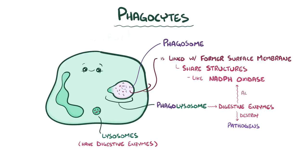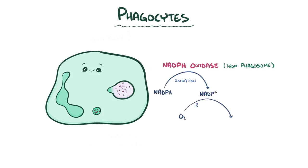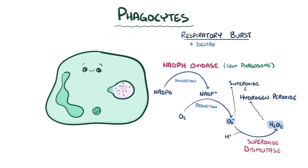The lysosomal enzymes also activate NADPH oxidase, which came from the phagosome, causing NADPH to undergo oxidation and lose two of its electrons, which reduces them to superoxide ions, or O2⁻. Another enzyme, superoxide dismutase, can take these ions and combine them with hydrogen ions to form hydrogen peroxide, or H₂O₂. This process of producing superoxide ions and hydrogen peroxide is called the respiratory burst. These ions and molecules destroy pathogens by damaging their cell membranes and proteins.